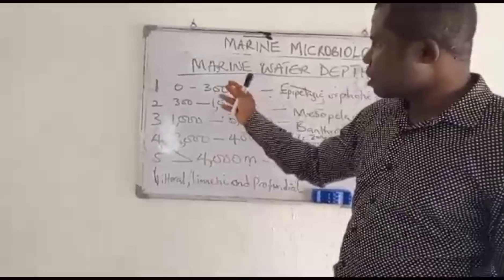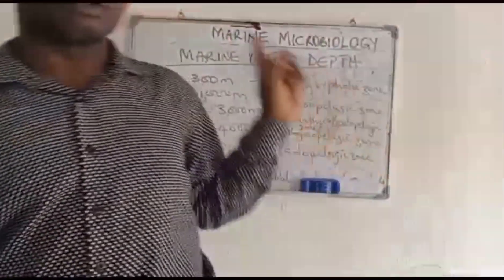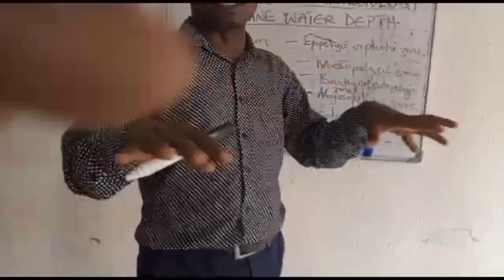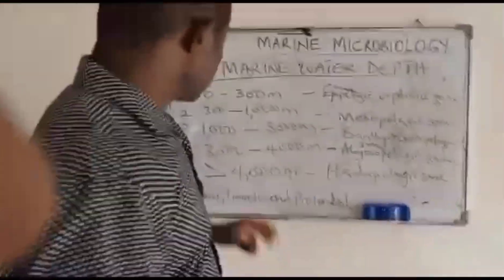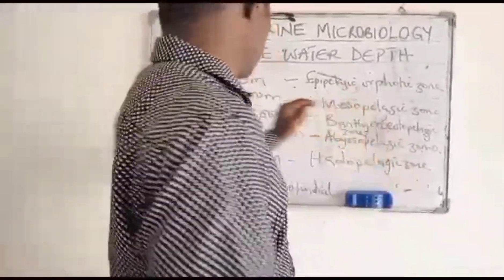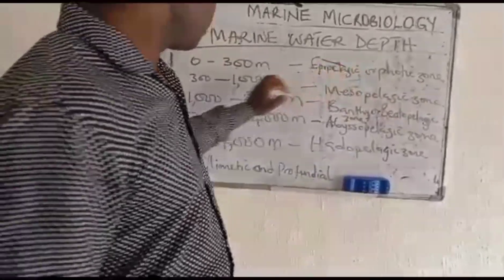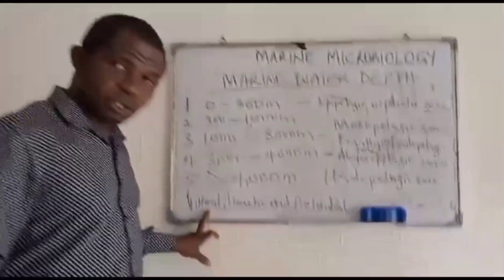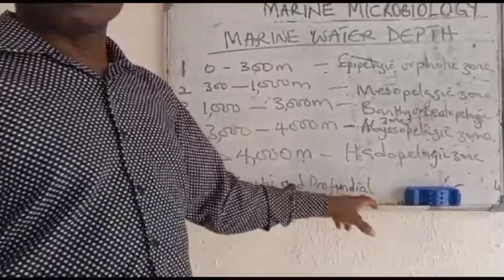The next topic is marine water depth. The marine ecosystem is divided into different water depths and shorelines, with five zones. One is the epipelagic or photic zone, with a water depth of zero to 300 meters below sea level. This zone is subdivided into three: the littoral, the limnetic, and the profundal subzones.